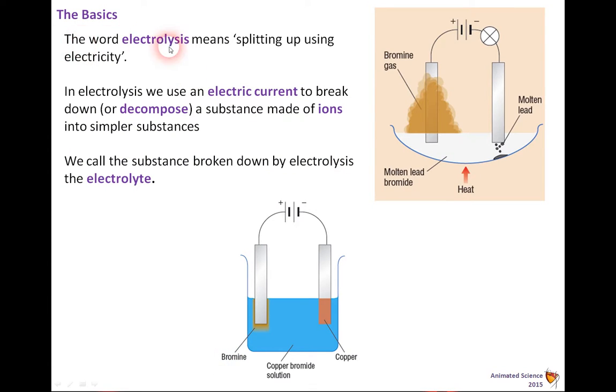The word electrolysis means splitting up using electricity. In electrolysis, we use an electric current to break down or decompose a substance made of ions into simpler substances, so an ionic structure. We call the substance broken down by electrolysis the electrolyte.